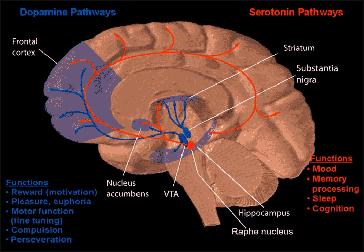There are two main branches of neuropharmacology: behavioral and molecular. Behavioral neuropharmacology focuses on the study of how drugs affect human behavior, including the study of how drug dependence and addiction affect the human brain. Molecular neuropharmacology involves the study of neurons and their neurochemical interactions, with the overall goal of developing drugs that have beneficial effects on neurological function.